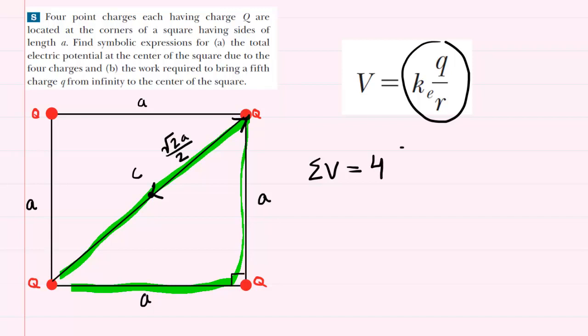So in other words, we're going to have 4 multiplied by the constant k sub e times the magnitude of charge, or I should say the amount of charge, which is capital Q, divided by the distance, and we just found that distance to be radical 2 over 2 and then A.